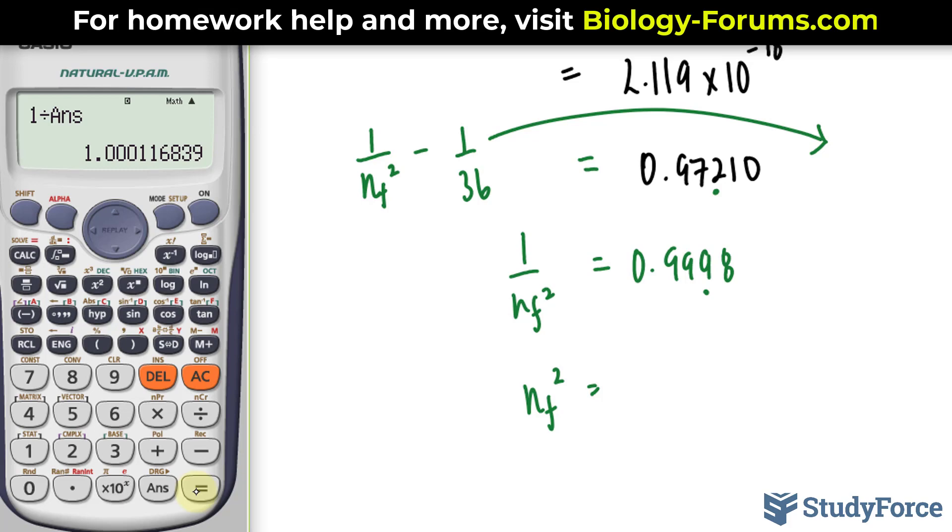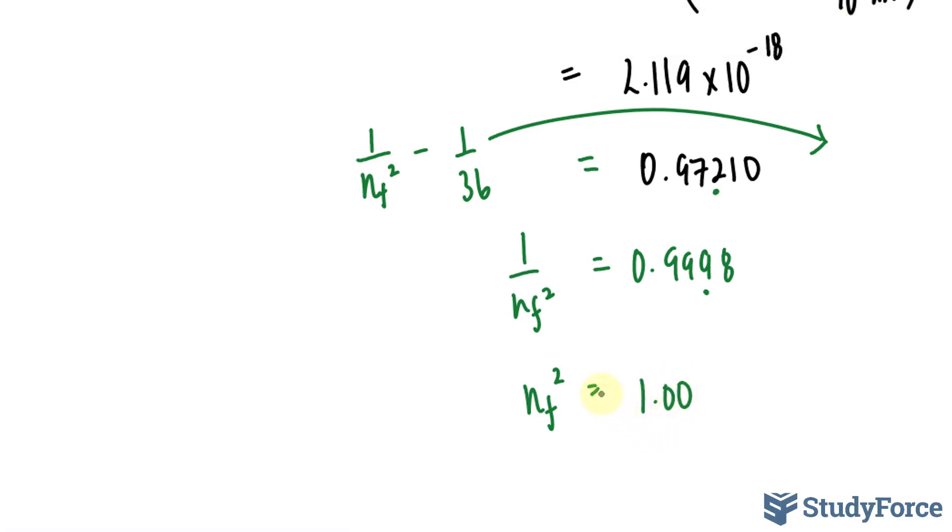I end up with this, 1, so 1.00. Now, if I square root both sides, I end up with my n final, 1. So, it goes from an energy level of 6 all the way to 1.